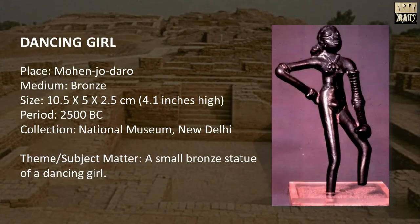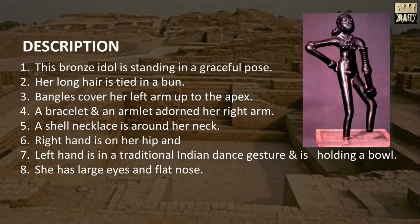First we'll discuss the Dancing Girl. Place: Mohenjodaro. Medium: Bronze. Size: 10.5 x 5 x 2.5 centimeters, approximately four point one inches high. Period: 2500 BC. Theme or subject matter: a small bronze statue of a dancing girl.